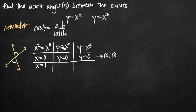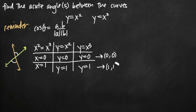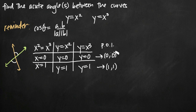If we take x equals 1 and plug it into both of our original equations, here we get y equals 1 and here we also get y equals 1. Again we have the same y value, so from this row we take x equals 1 and y equals 1, giving us the coordinate point (1, 1). These are the coordinate points where our curves y equals x squared and y equals x cubed intersect one another.